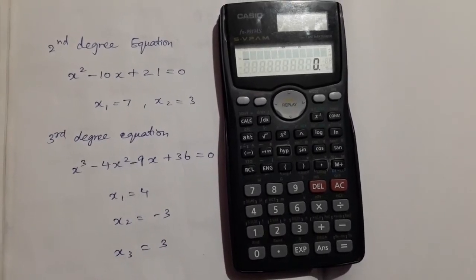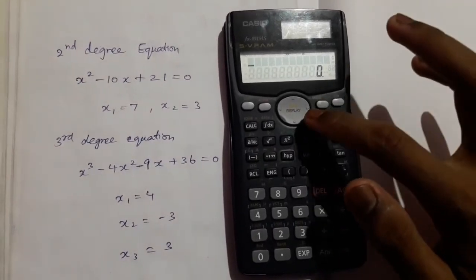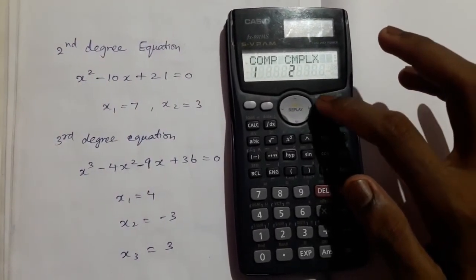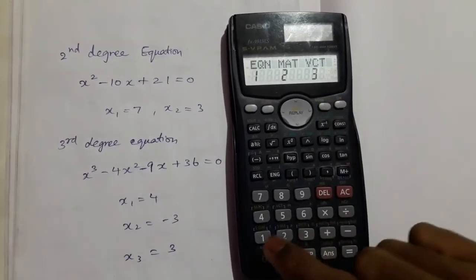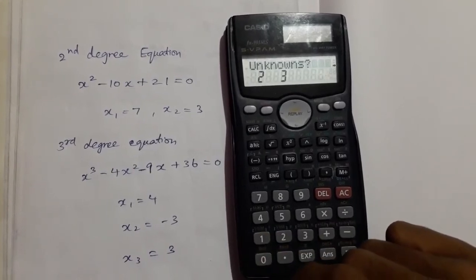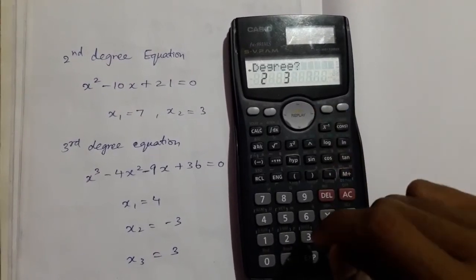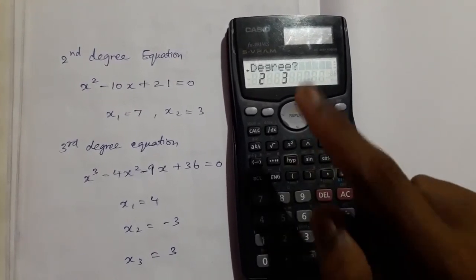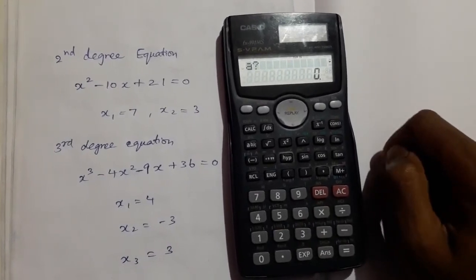First we have to click the mode 3 times and click the equation by clicking 1, and press the right side button and click 2. Then input the numbers for x square, the coefficient is 1, press equal to, and for x the coefficient is minus 10.